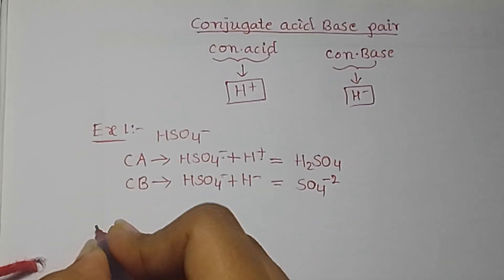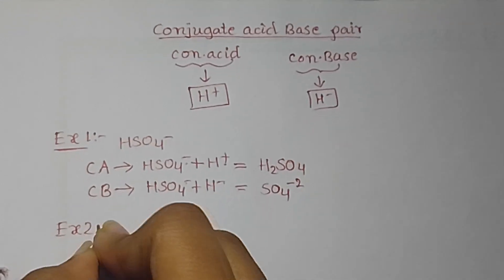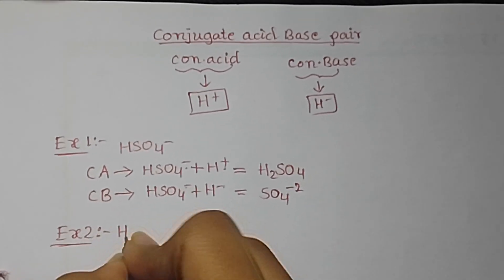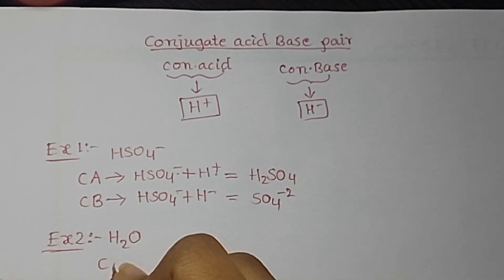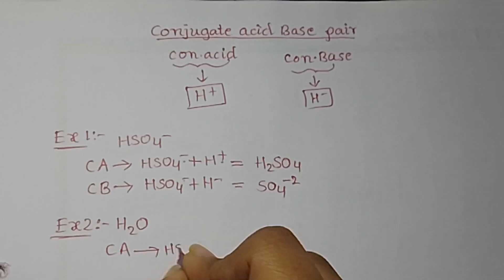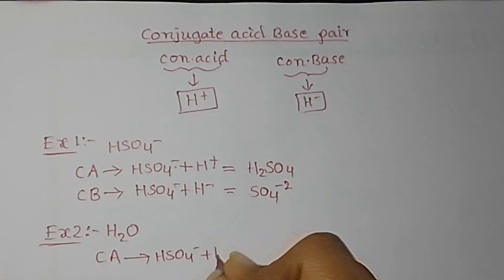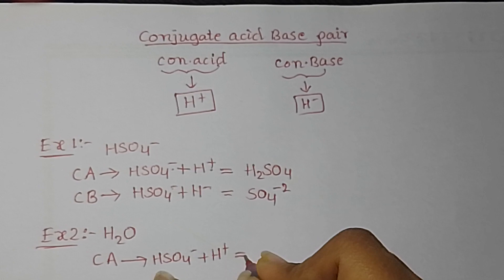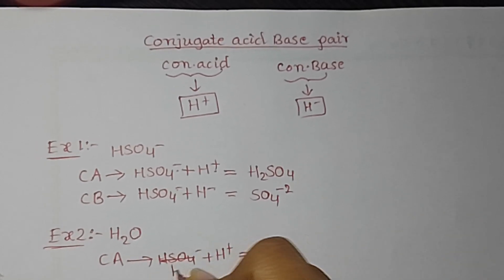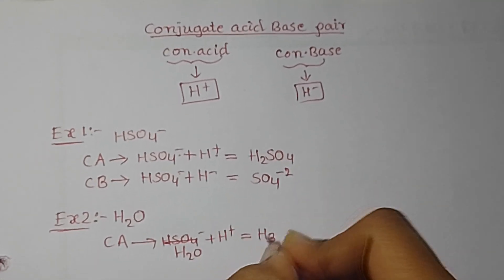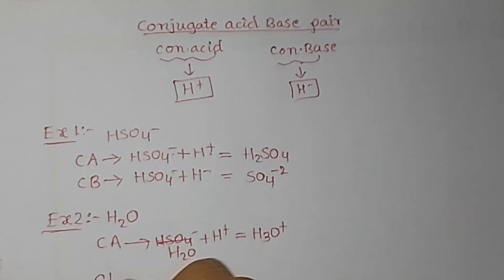Next, let us go to example 2. Example 2 is H2O. The conjugate acid of H2O is H2O plus H plus, which gives H3O plus.